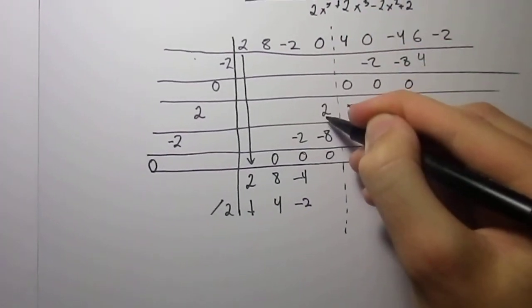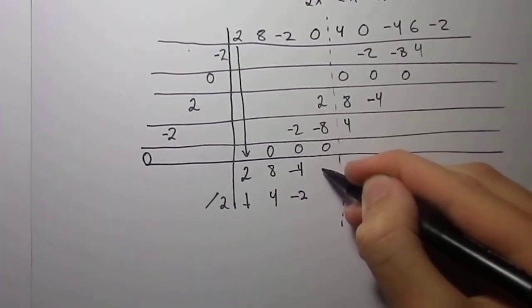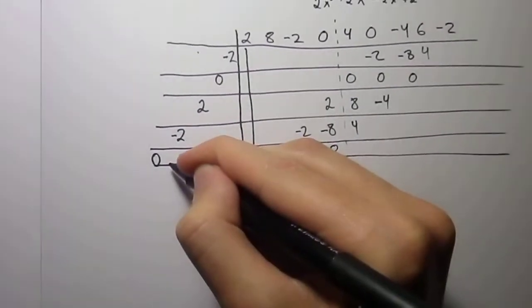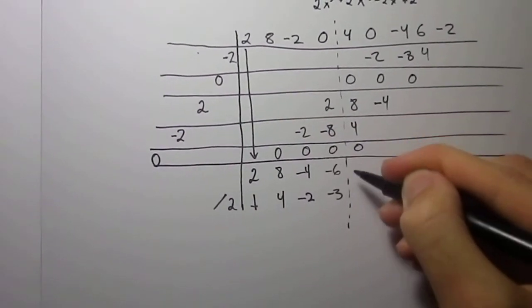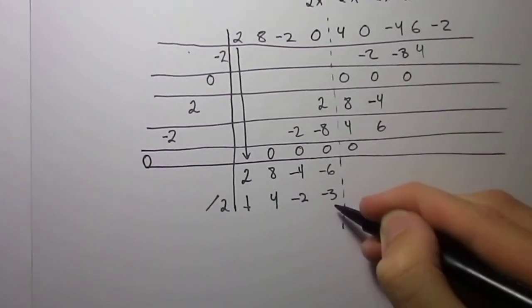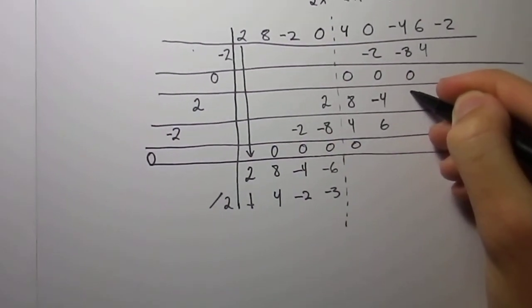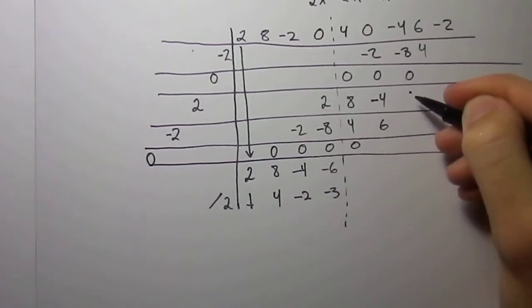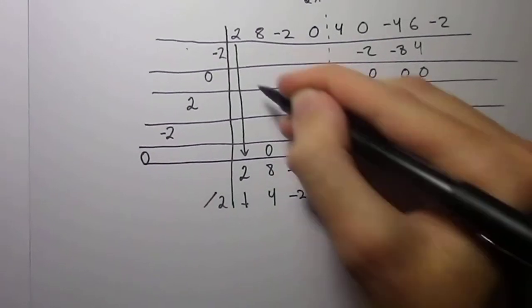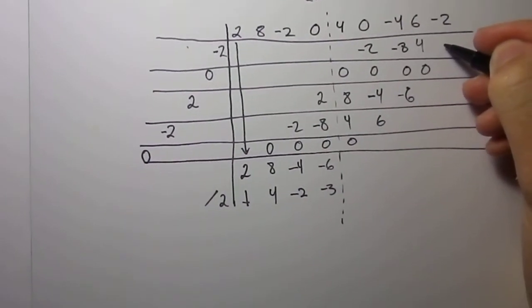And, likewise, 2 minus 8 is a minus 6. Divide by 2 is a negative 3. Times 0 is 0. Negative 3 times negative 2 is a positive 6. Negative 3 times 2 is a negative 6. Negative 3 times 0 is 0. And negative 3 times negative 2 is a positive 6.